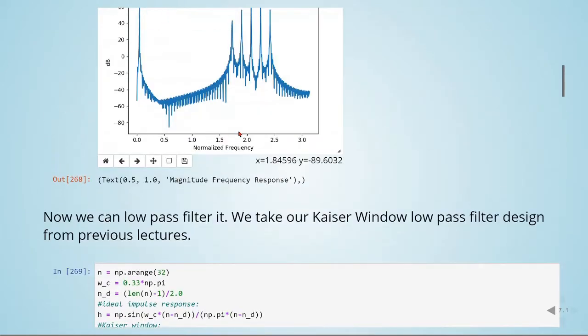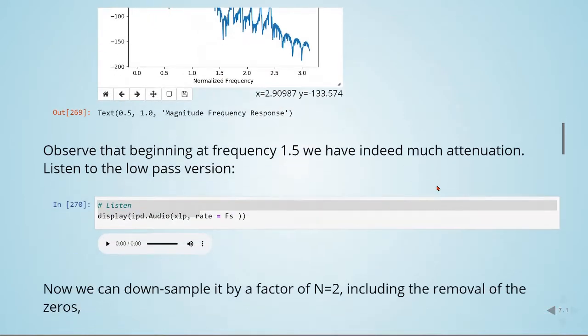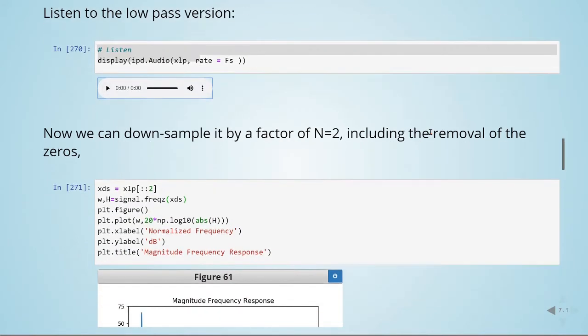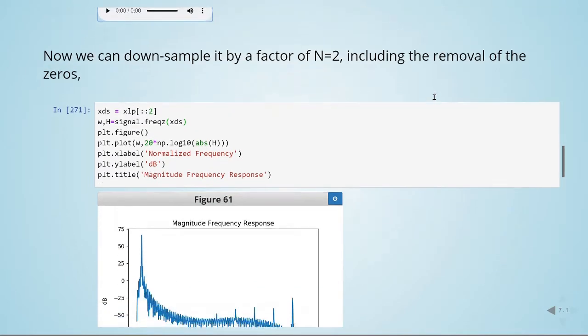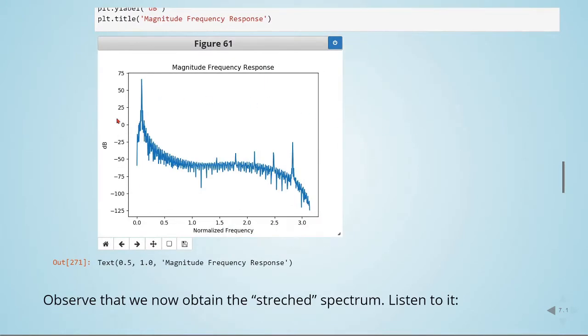This is the original with the high frequency components, and here is the low pass version. Now we can downsample it by a factor of n equals 2, including the removal of zeros. This is what we are doing here, downsampling by a factor of 2.